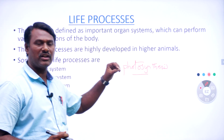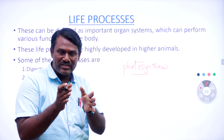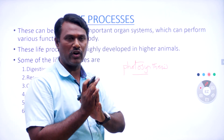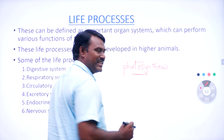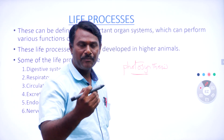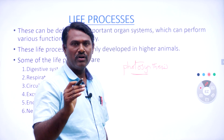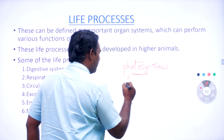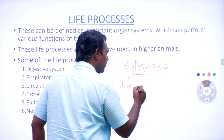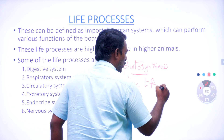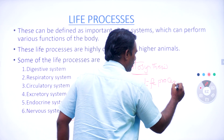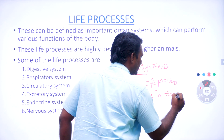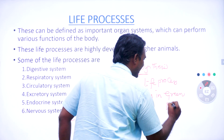Photosynthesis is a type of life process which occurs in all green plants. Photosynthesis is done in plants with the help of essential factors. So photosynthesis is considered as a basic and very important life process which occurs in all green plants.